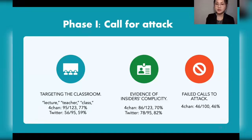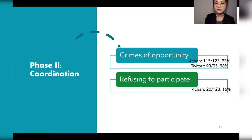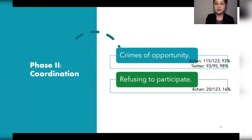While 100 threads did not start with a bombing invitation, 46% of these received no further replies, suggesting the call for attack was still attempted. After posting an invite, attackers coordinated to carry it out. We found that 93% of bombing links on 4chan and 98% on Twitter came with a clear implication that the meeting was live at posting time. We found 16% of threads on 4chan where users openly refused to join the attack, asking 'NYPA' — not your personal army — indicating that not all 4chan users are willing to participate, which may explain some failed attacks.